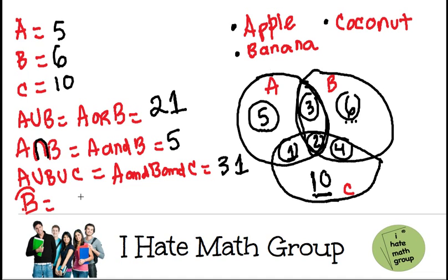Now, what about if they ask me the complement of B? That means every single person that does not like bananas. Well, look, all the people that do not like bananas is everything that is no B. In this case, it's going to be 5, 1, and 10. So that's going to be 16 people.